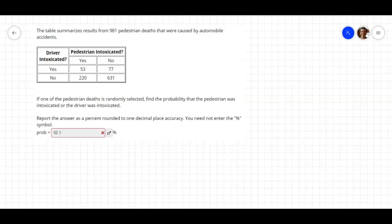All right, we're looking at a table that summarizes 981 pedestrian deaths that were caused by automobile accidents. If one of the pedestrian deaths is randomly selected, find the probability the pedestrian was intoxicated or the driver was intoxicated.